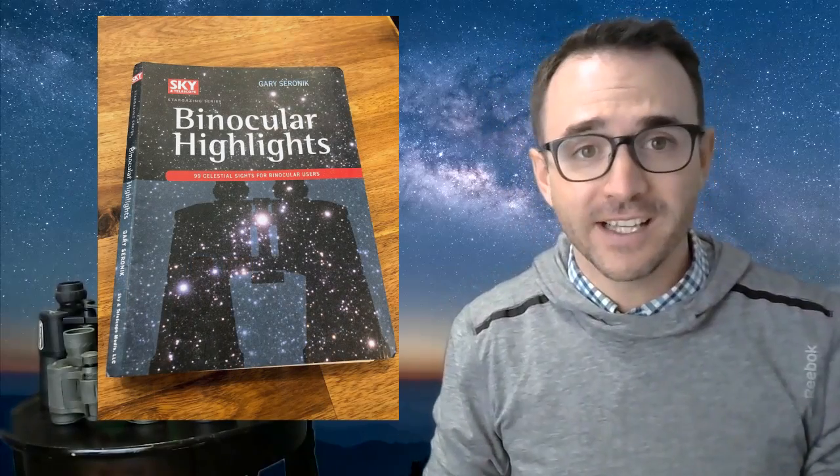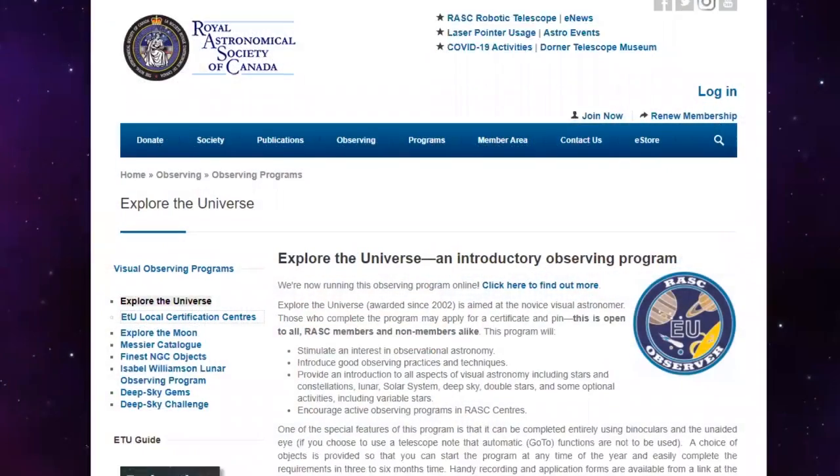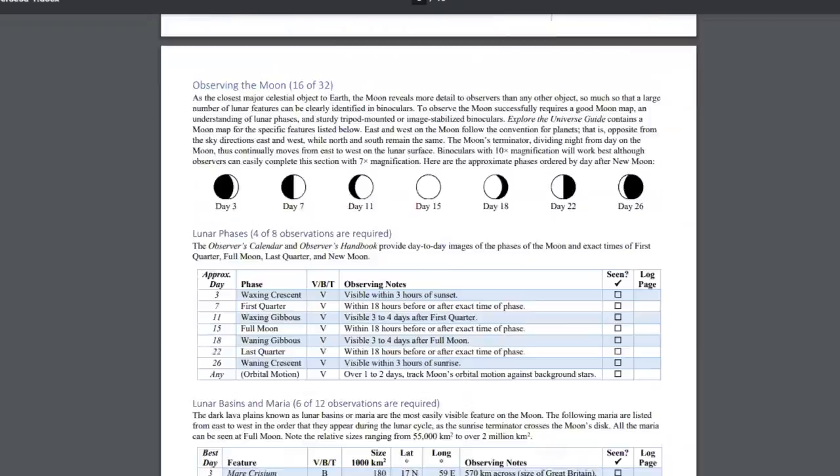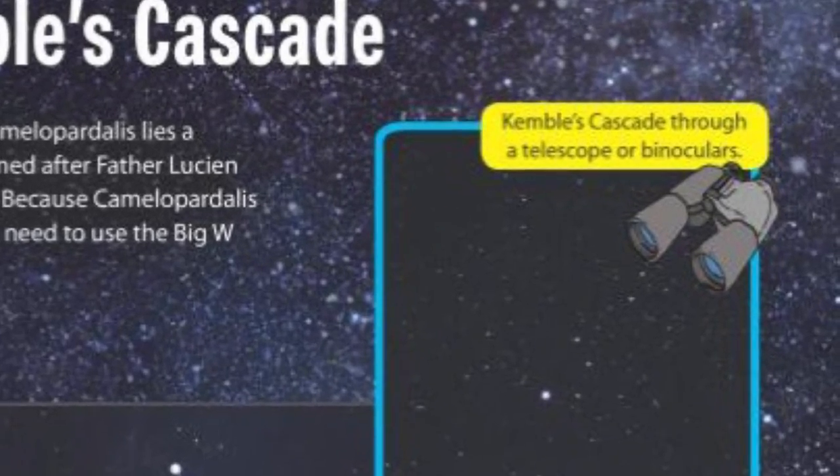One of the most challenging tasks for a beginner stargazer is finding targets. If you want help choosing a target, here are three great options. First, the book Binocular Highlights by Gary Seronik. It's a great book. I use it all the time. Second, you can download the Explore the Universe program from the Royal Astronomical Society of Canada. All of their targets can be found with binoculars. And third, you can check out my book, 50 Things to See with a Telescope, where the binocular targets are marked with this symbol. That said, here are a few great targets to get you started.